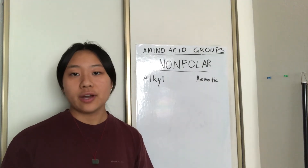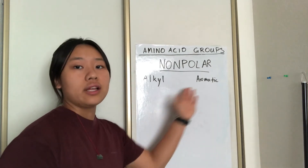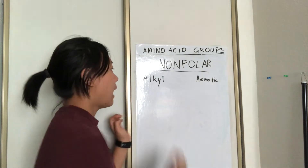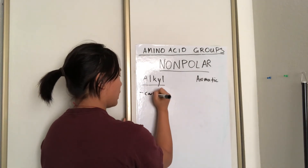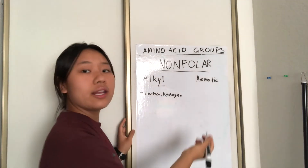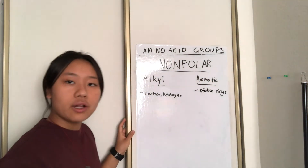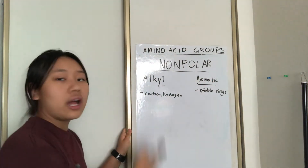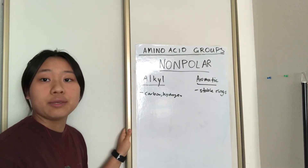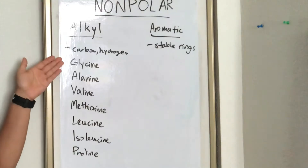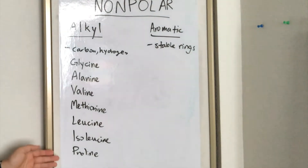Let's start with non-polar amino acids. It's normally split into two subgroups: aliphatic and aromatics. Aliphatic basically means it's only composed of carbon and hydrogen. Aromatic means they come in stable rings that help support the molecule. Under aliphatic, we have glycine, alanine, valine, methionine, leucine, isoleucine, and proline.